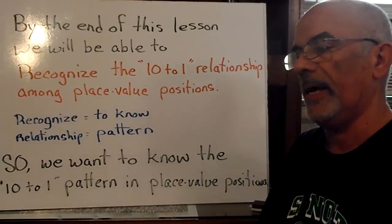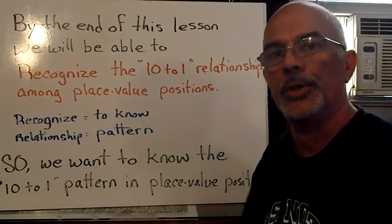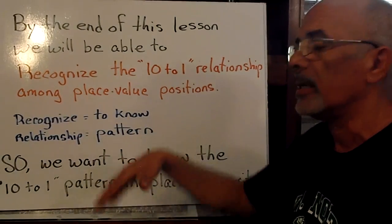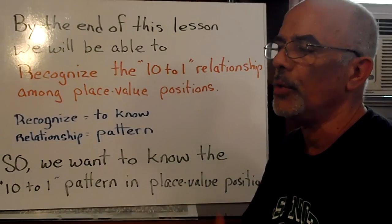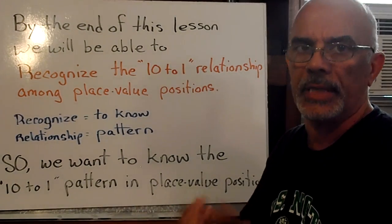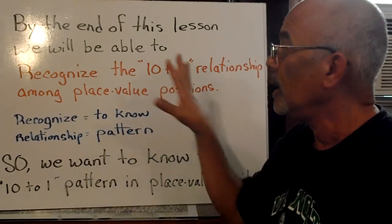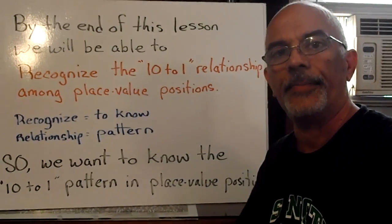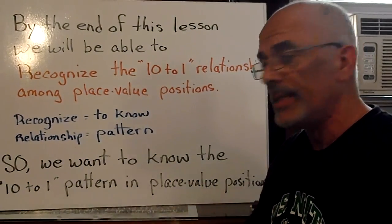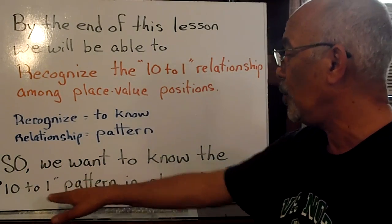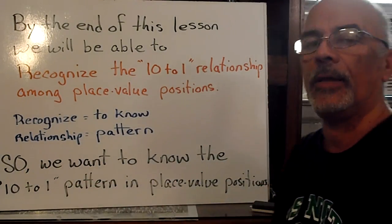Now we all know what place value positions are, your ones, tens, hundreds, and so on. We might not know what recognize means. Recognize really means just to know. When you recognize something, you know it. You've seen it before, you can recognize it next time. A relationship in this sentence means a pattern. So we want to know the 10 to 1 pattern in place value positions.